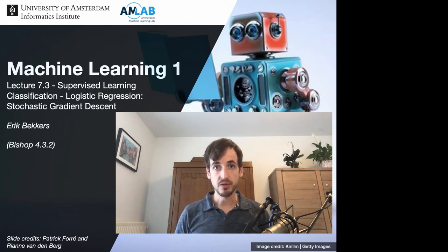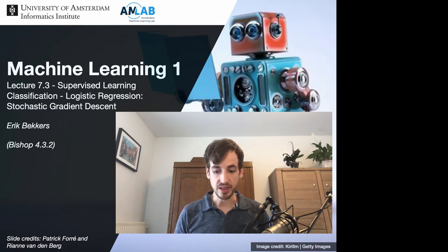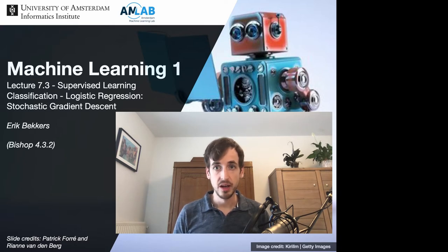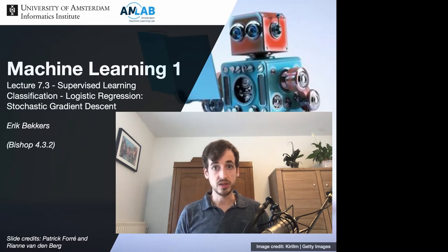We just saw that logistic regression is a great choice as a probabilistic discriminative model. In contrast to regular least squares regression for classification, logistic regression properly deals with outliers. And with respect to full probabilistic generative models, logistic regression is much more parameter efficient. So logistic regression is great for classification. Now let's see how we can optimize such models.